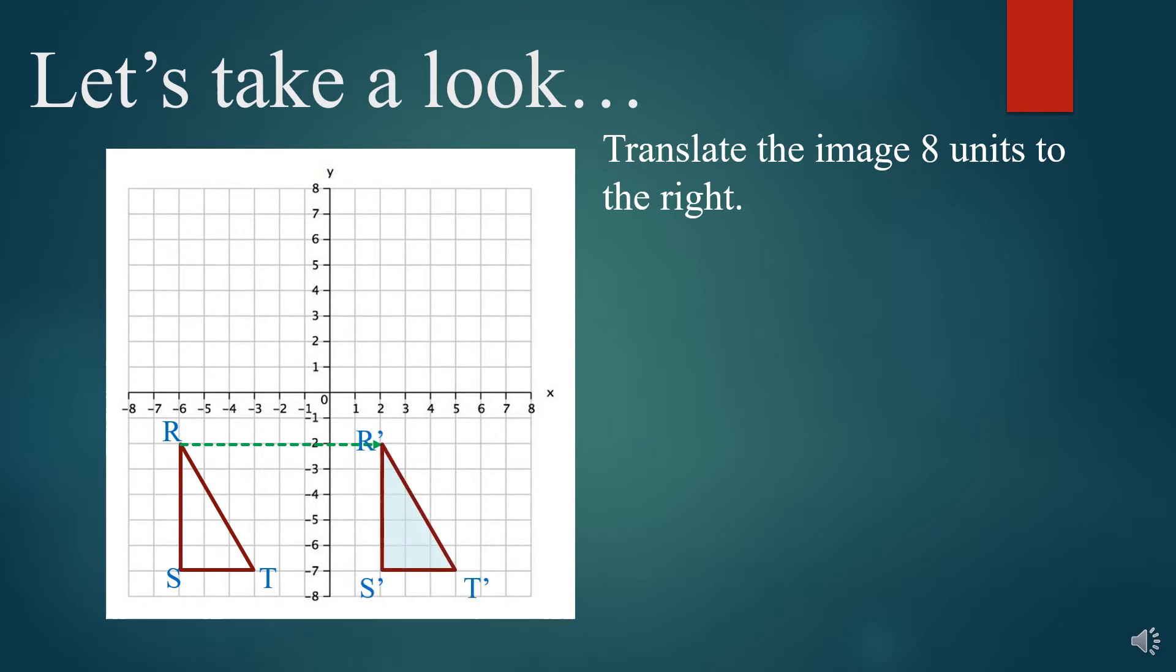Now, you'll notice I used a little apostrophe after each of the R, S, and T, and that stands for prime, so we call that R prime, S prime, and T prime. That's how we notate a new image.